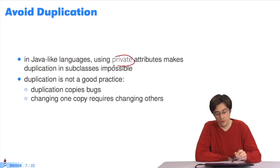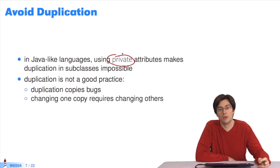In languages like Java that use private keywords, if the attributes used by the method are private, what I just did is impossible. If the method uses instance variables that are private, subclasses cannot duplicate code. But in any case, duplicating is not good practice. Because duplication copies bugs, too.